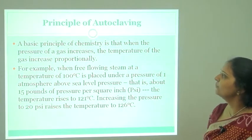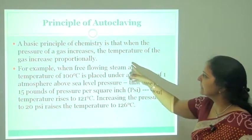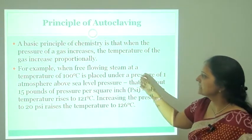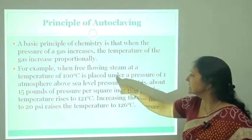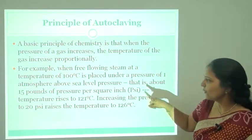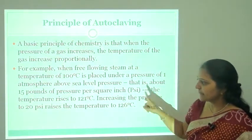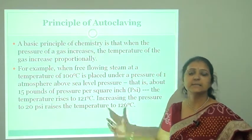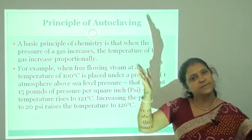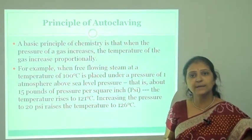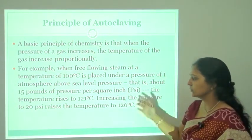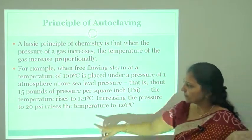The principle of the autoclave is that when the pressure of a gas increases, the temperature of the gas increases proportionally. For example, when free-flowing steam at 100°C is placed under a pressure of 1 atmosphere above sea level pressure — about 15 pounds per square inch — the temperature rises to 121°C. As pressure increases, temperature increases simultaneously — both are proportional and together they reduce the growth of microorganisms.